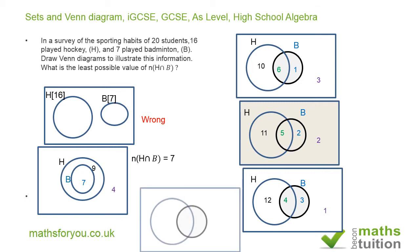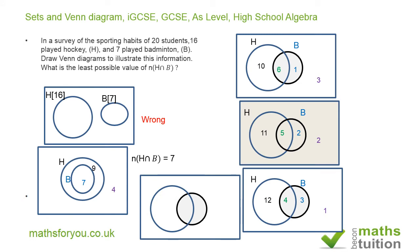In the final diagram, 13 students play just hockey only. Since 16 play hockey in total, 3 must play both hockey and badminton. We need 7 to play badminton, and 3 already play both, so 4 play just badminton only. Now 13 + 3 + 4 = 20, so every student plays either hockey or badminton. The least possible number of students who played both hockey and badminton is therefore three.